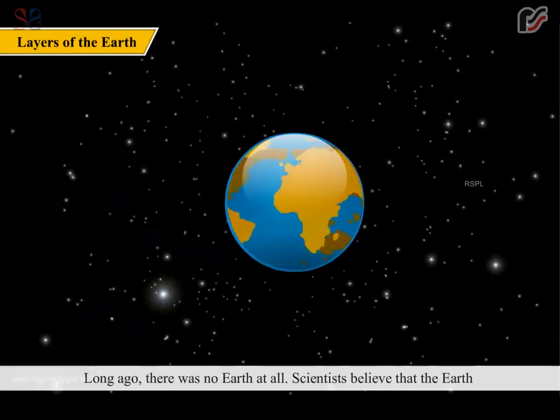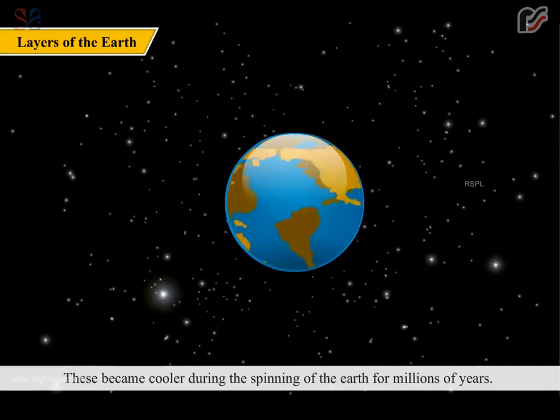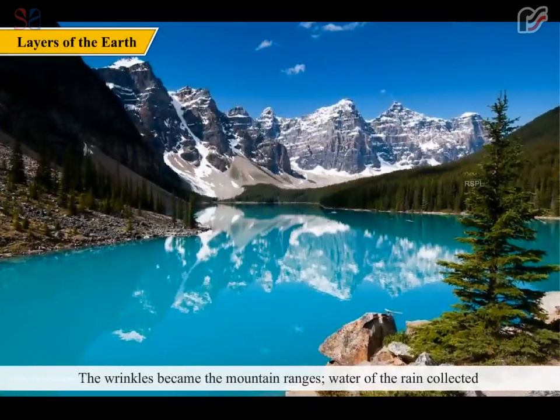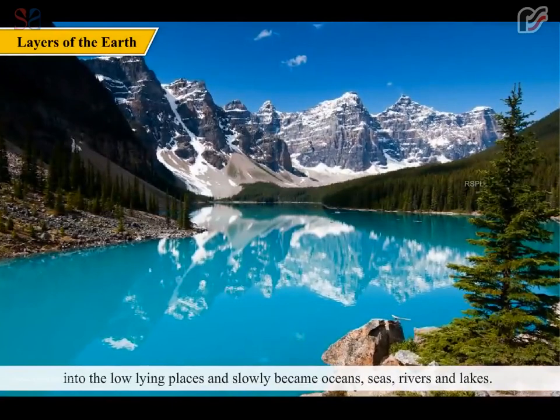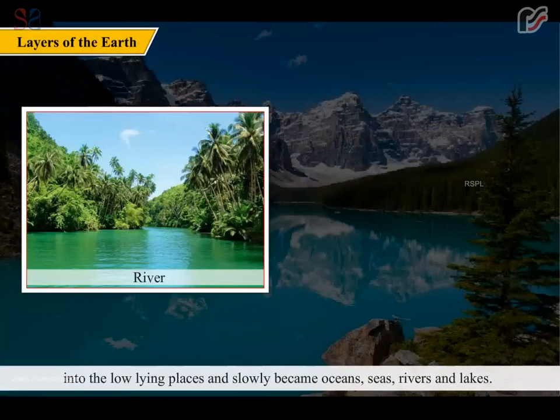Long ago, there was no Earth at all. Scientists believe that the Earth started as a large ball of burning gases. These became cooler during the spinning of the Earth for millions of years. As it cooled, it became hard and the surface of the Earth became a crust with wrinkles. The wrinkles became the mountain ranges. Water from the rain collected into the low-lying places and slowly became oceans, seas, rivers and lakes.